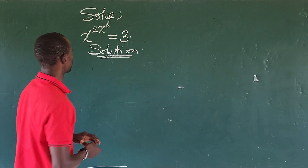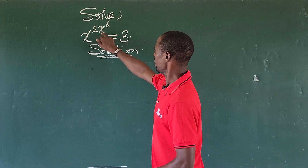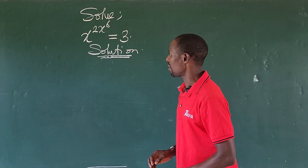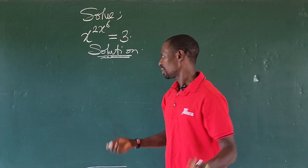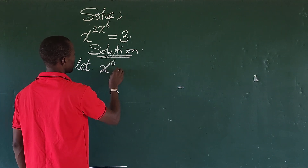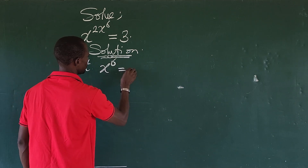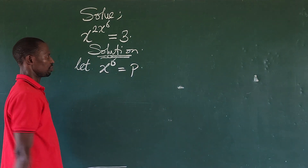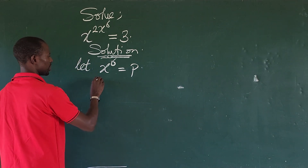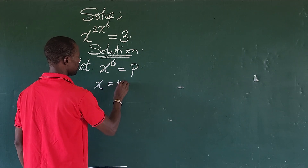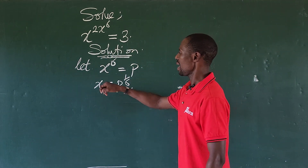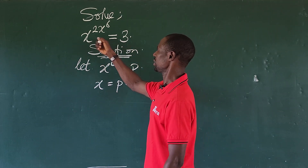The first thing we're going to do is look at this exponent. We want to substitute something for x to the power of six. So let's do a simple substitution: let x to the power of six be equal to p. We can make x the subject by taking the sixth root of both sides, so x is equal to p to the power of one over six.